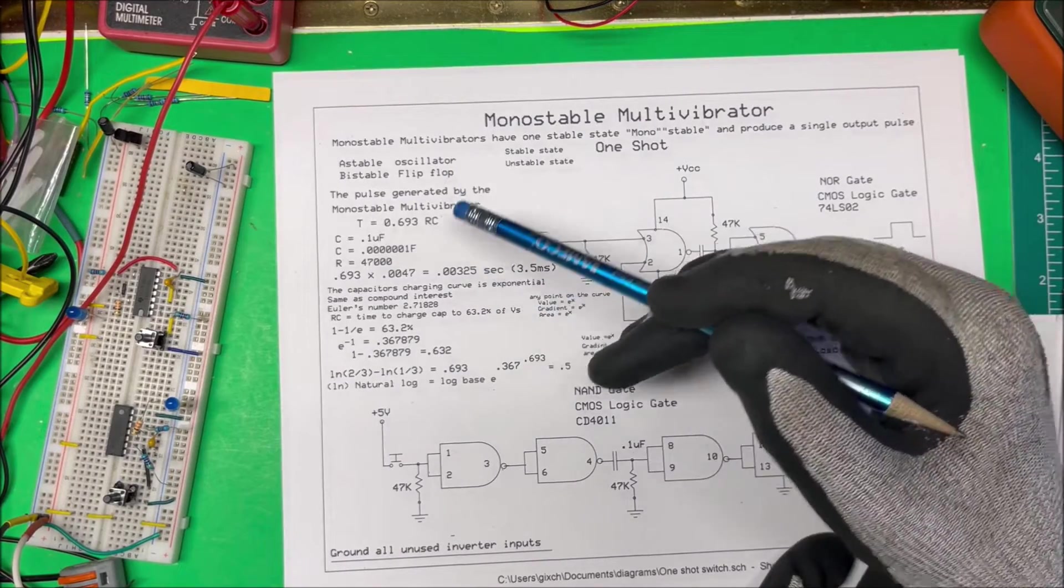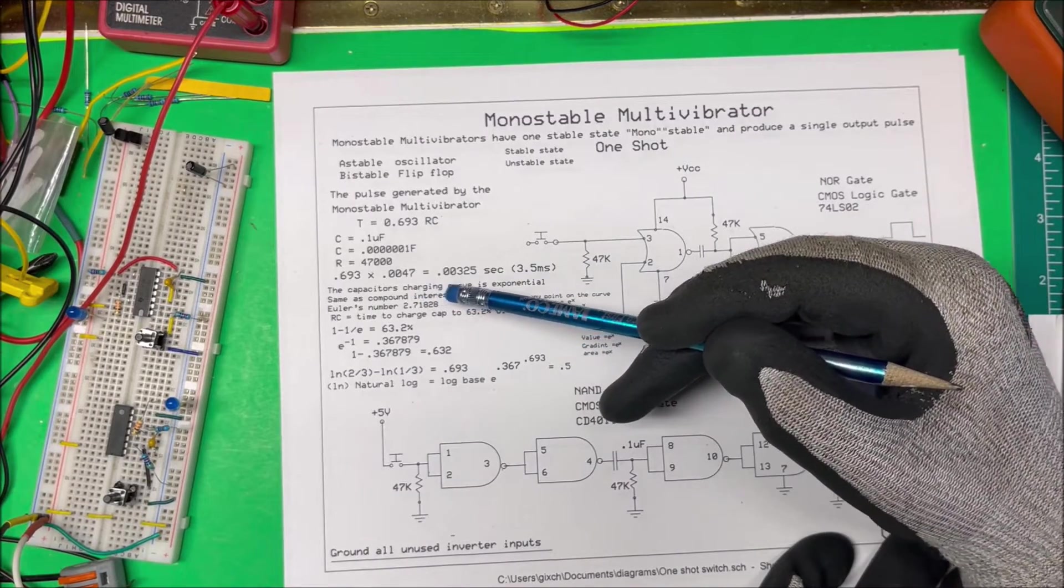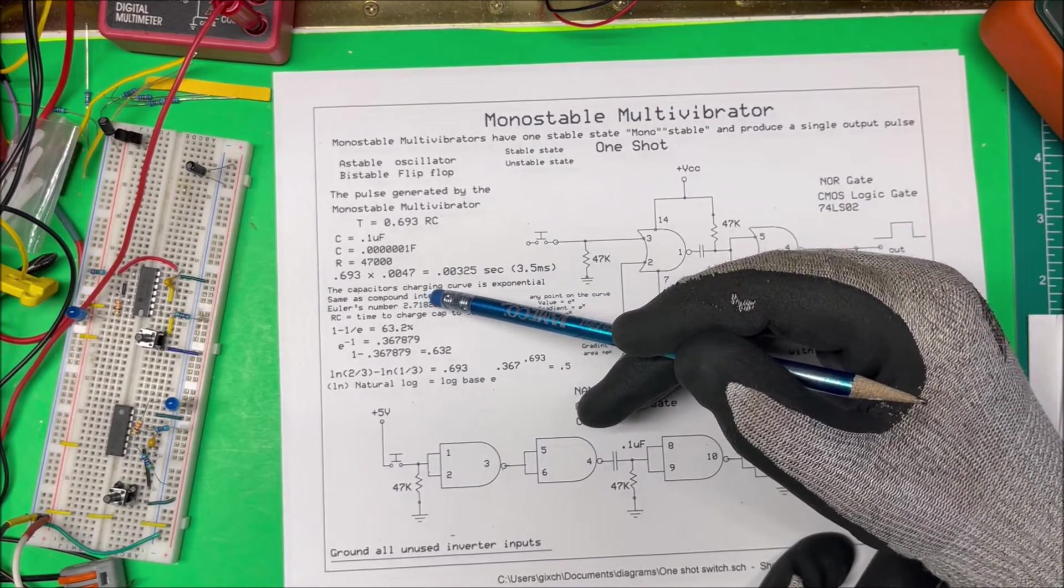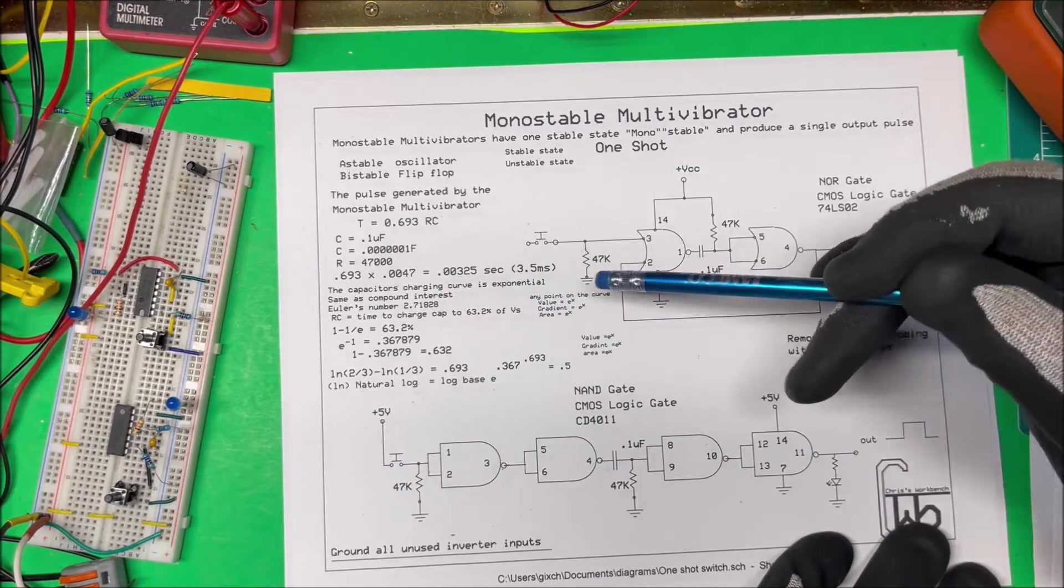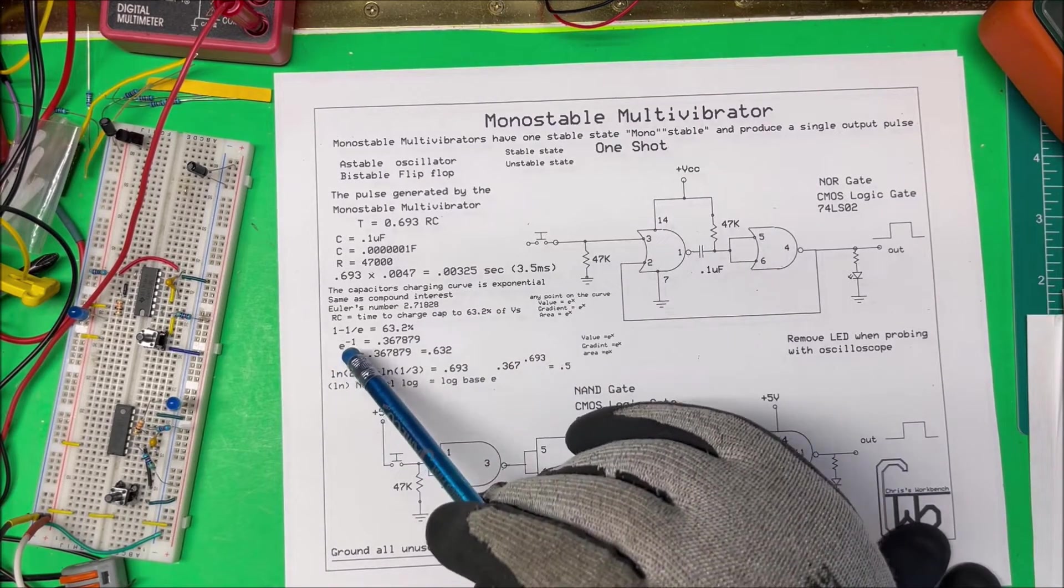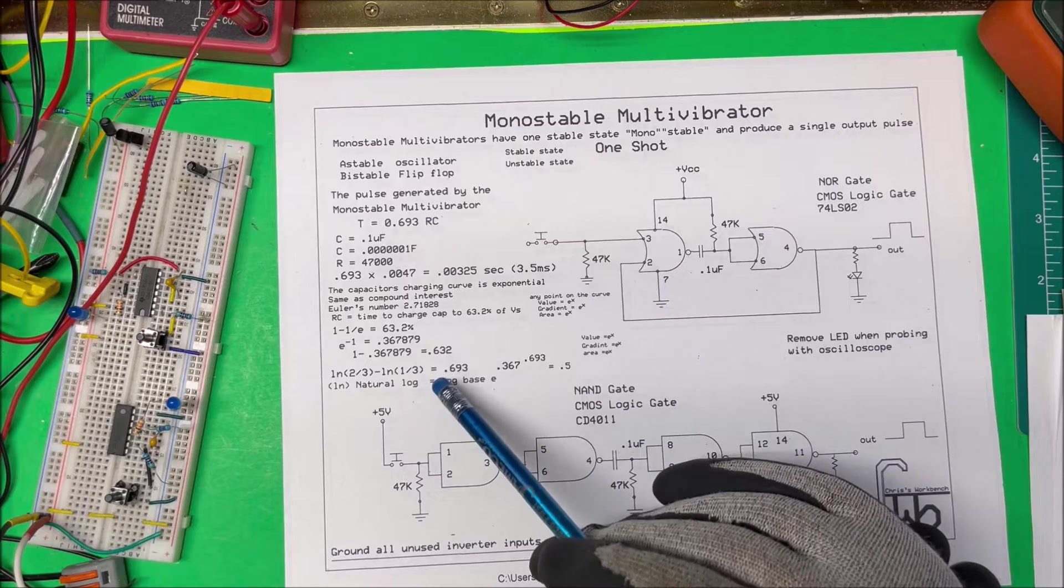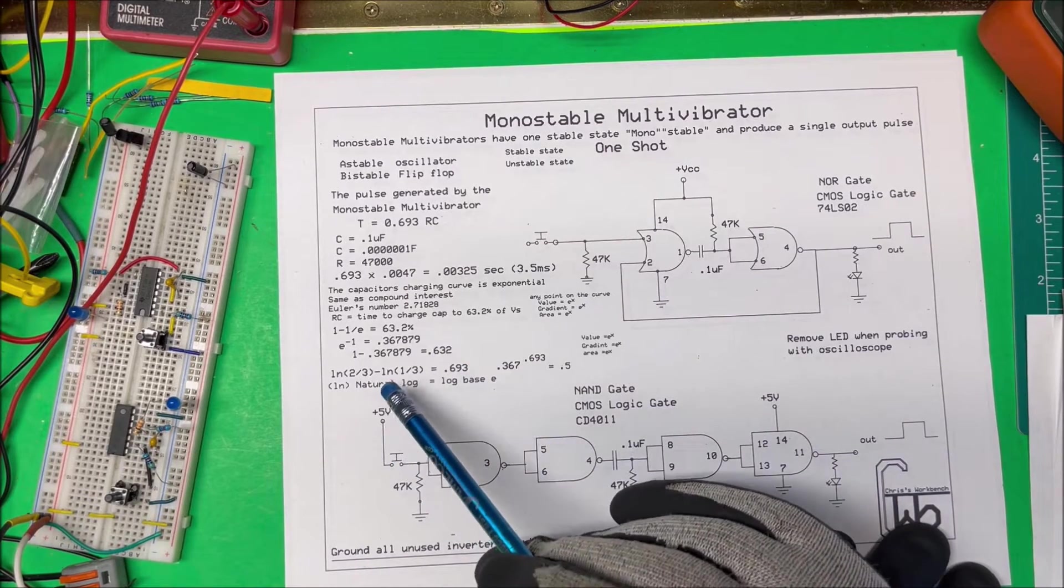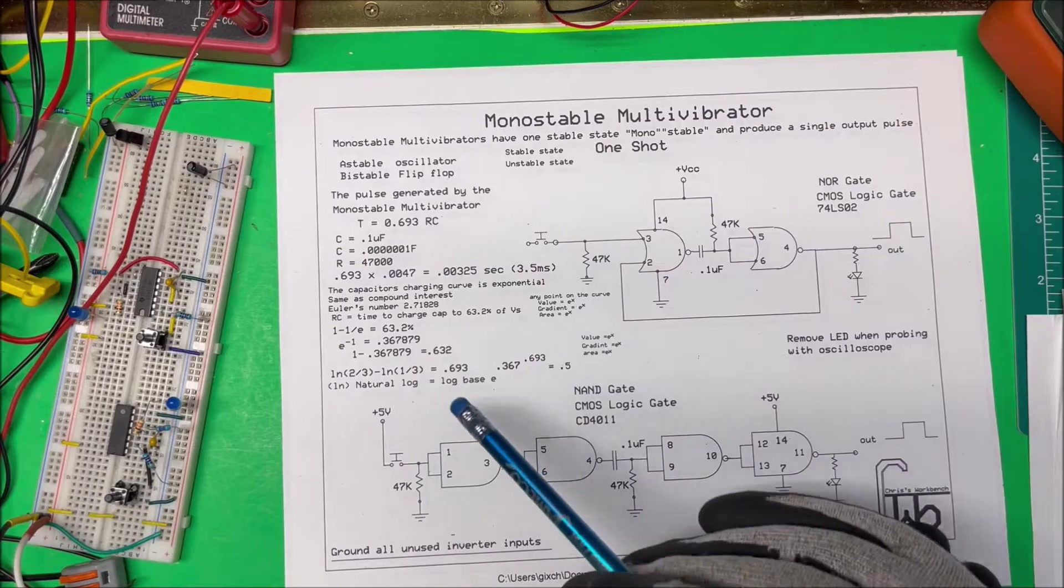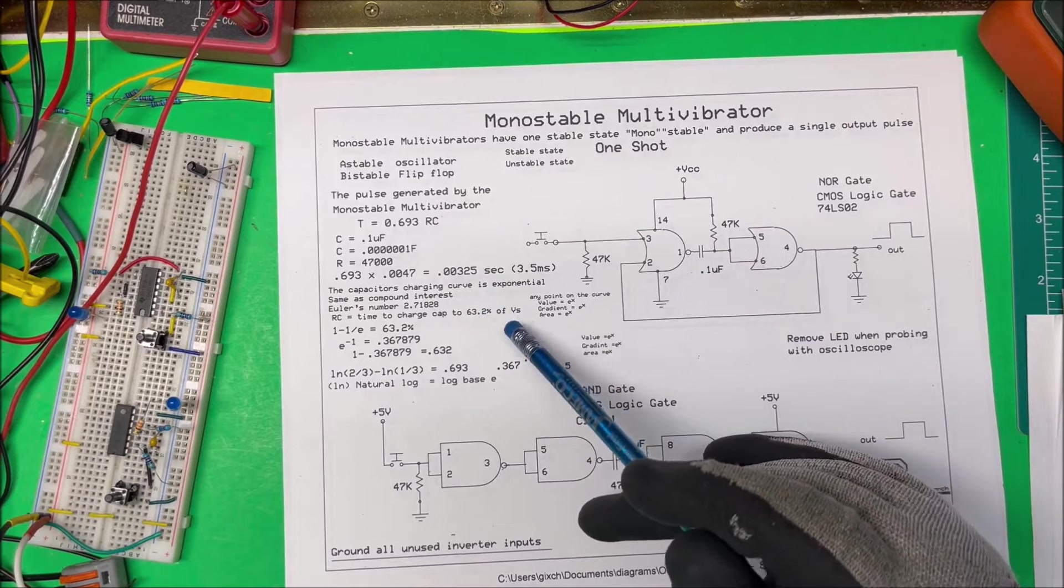Where does this number come from? The capacitor charging curve is an exponential curve, the same curve used to calculate compound interest. Euler came up with his number, 2.71828, an irrational number like pi that we use all the time with capacitors. If you take the reciprocal of that number and subtract it from one, you get 0.632, or 63 percent. So RC is the time it takes to charge a capacitor to 63 percent of the supply voltage.